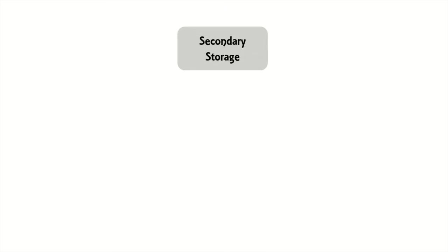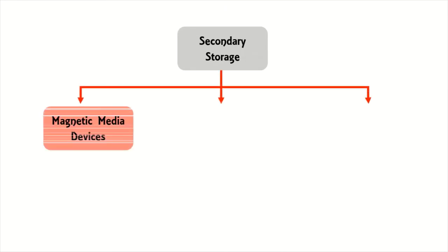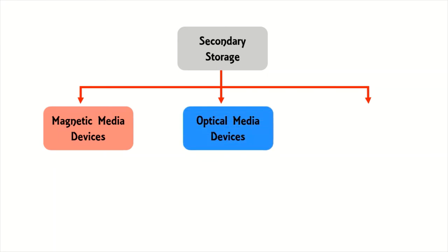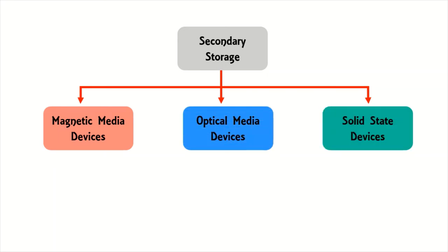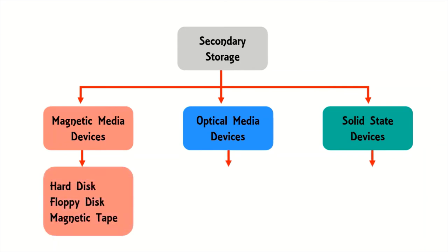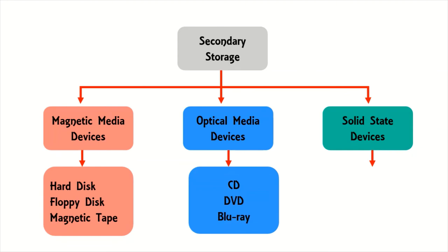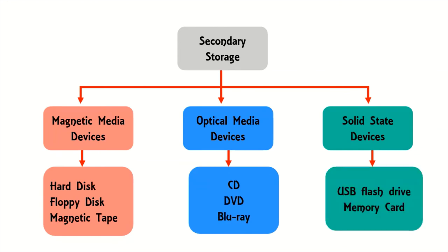Secondary storage devices include: Magnetic media devices — such as hard disk, floppy disk, and magnetic tape; Optical media devices — such as CD, DVD, and Blu-ray; and Solid state devices — such as USB flash drive and memory card.